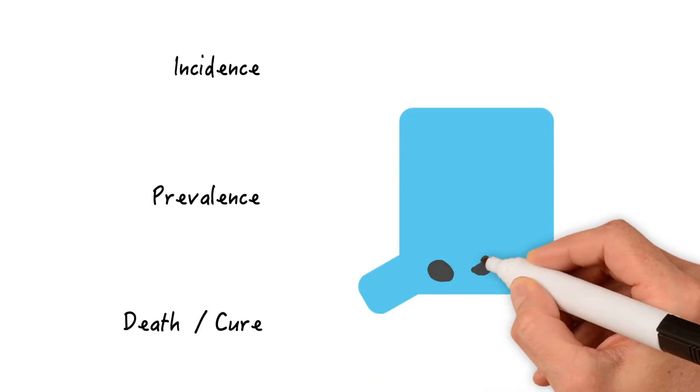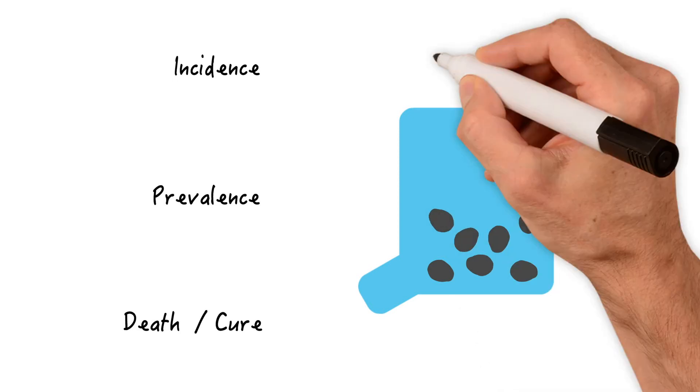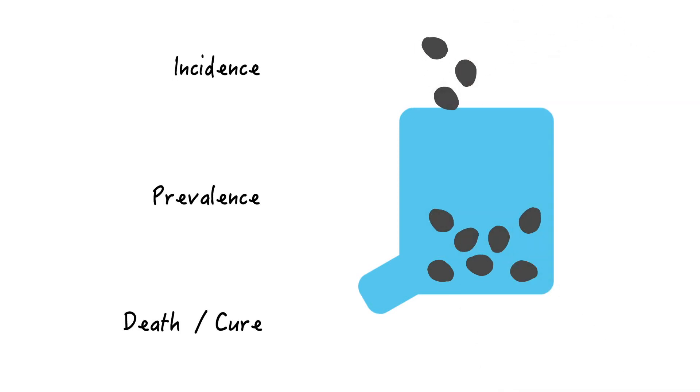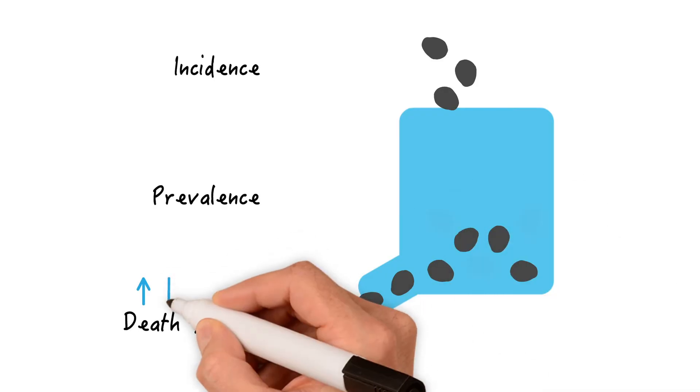Let us depict that with a vessel full of pebbles. The vessel is filled with pebbles or new cases by the incidence rate and it's emptied by death or cure. This means that if death goes up, then more people will leave the vessel and if death goes down, then more people will stay in the vessel.